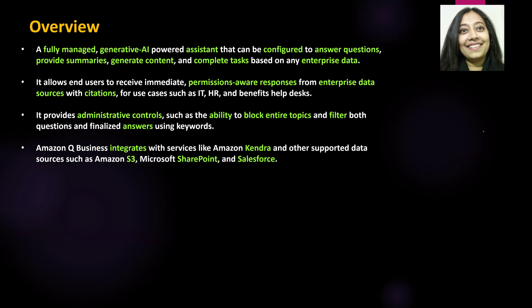So what is Amazon Q Business? It is a fully managed gen AI powered assistant that can be configured to answer questions, provide summaries, generate content, or complete tasks based on any enterprise data.